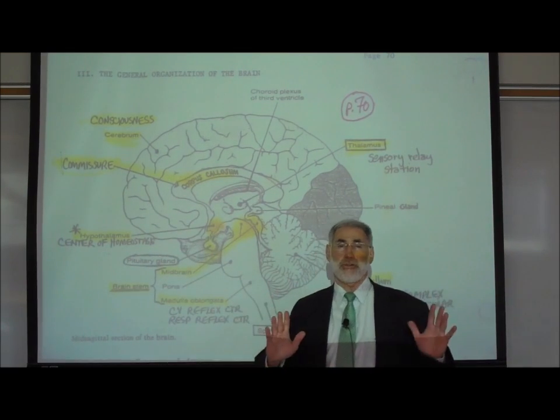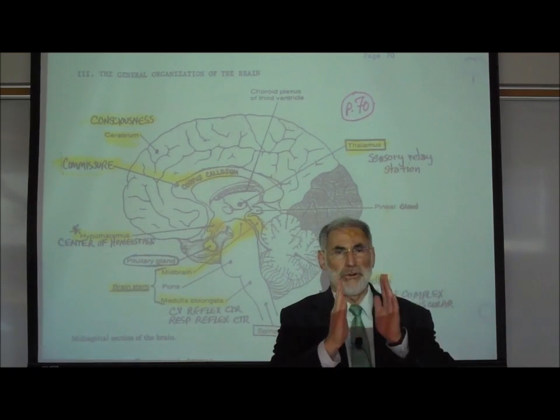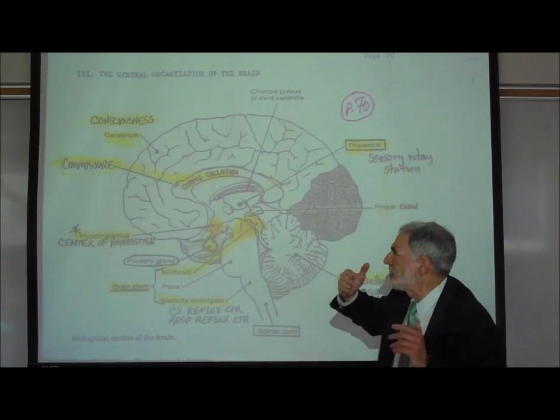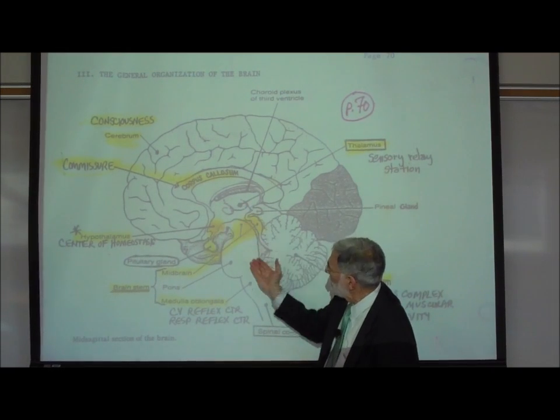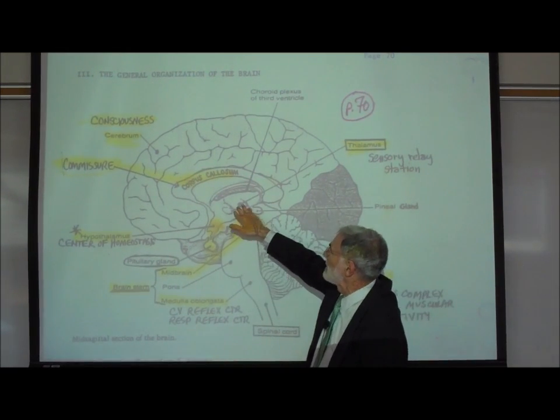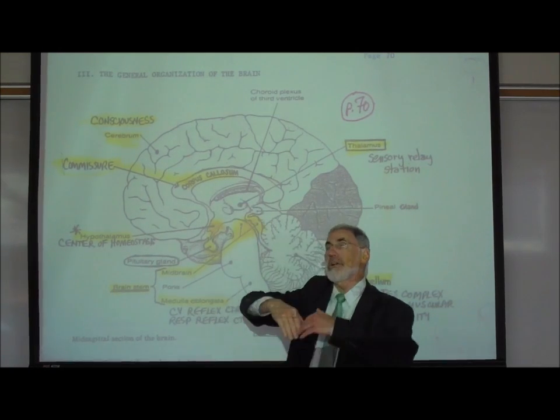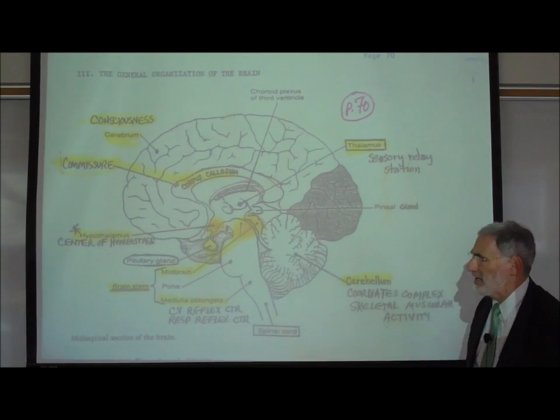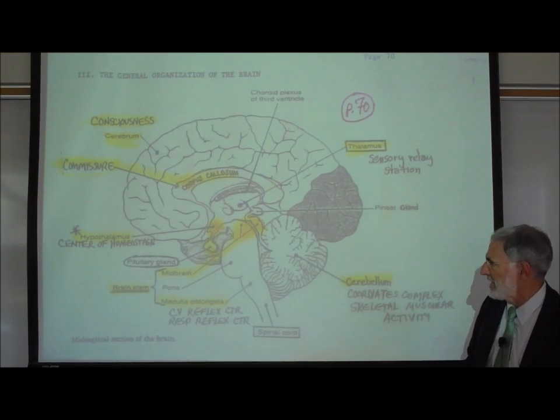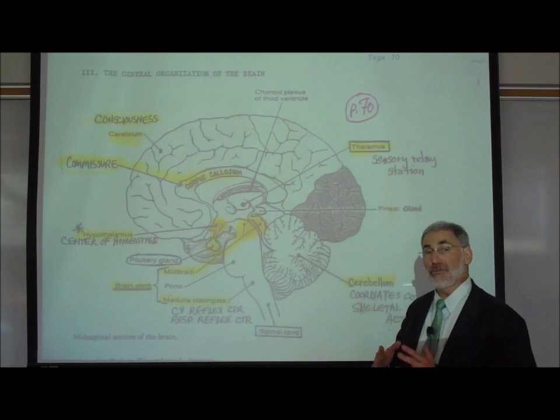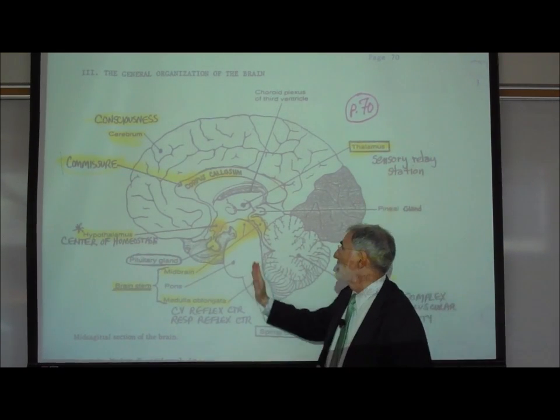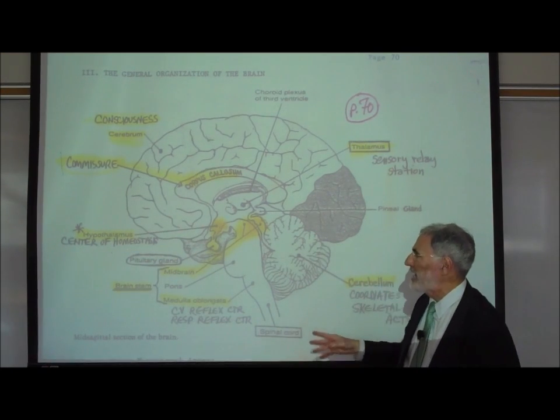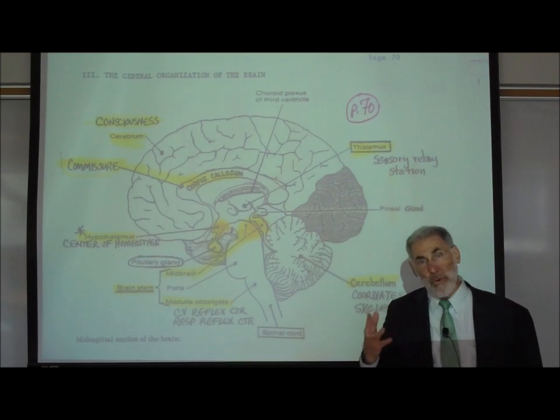As we indicated, it is a sensory relay station. In fact, almost all sensory information, certainly all the sensory information coming up through the spinal cord, including sensory information from our eyes and our ears, synapses or is relayed to the thalamus before it is forwarded or relayed to other parts of the brain, including up to the cerebral cortex. The thalamus is important in the relaying of sensory information to higher levels of the brain and is associated with the waking center.